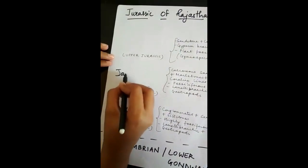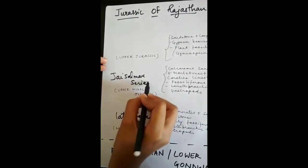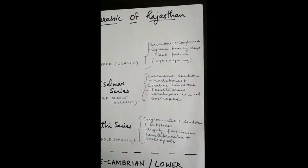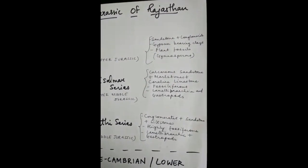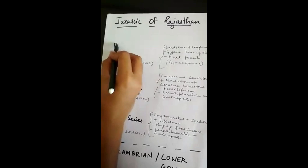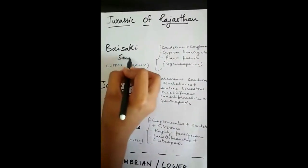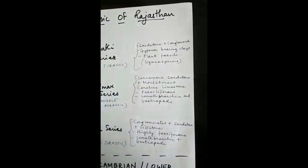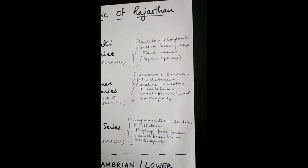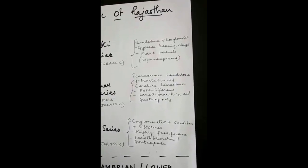Above the Lathi series is the Jaisalmer series, which was formed in the upper middle Jurassic. It consists of calcareous sandstones, mudstones, and coralline limestone. It is fossiliferous and contains lamellibranchia and gastropods. Above this is the Baisaki series, which was formed in the upper Jurassic. It consists of sandstone conglomerate and gypsum-bearing clays formed under reducing conditions, and has plant fossils mainly of gymnosperms.